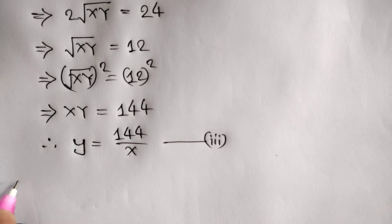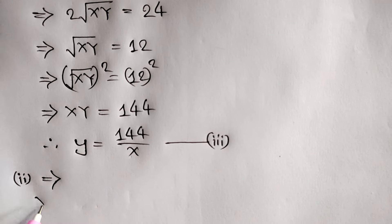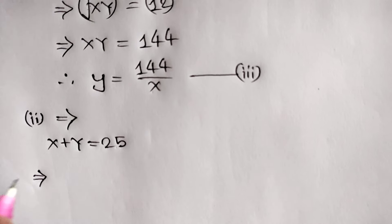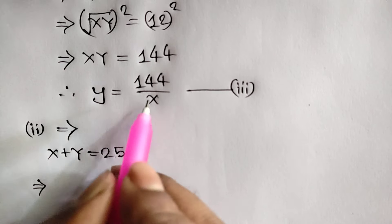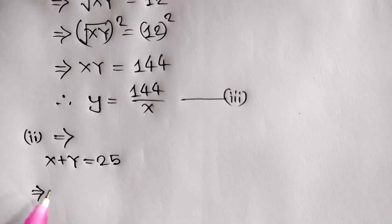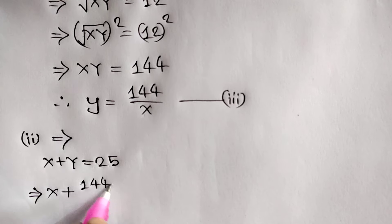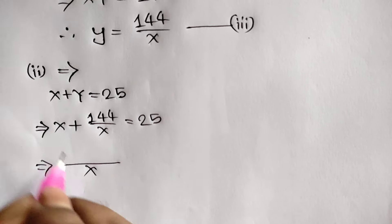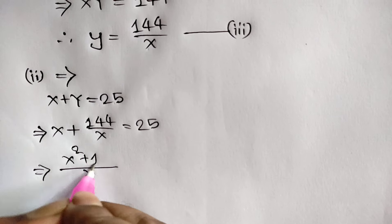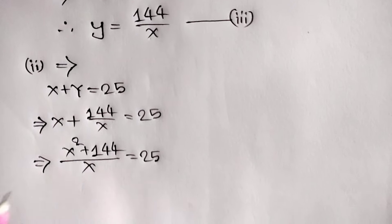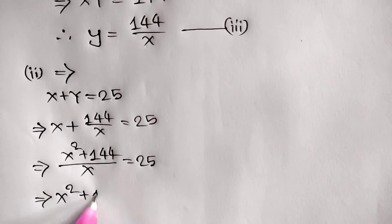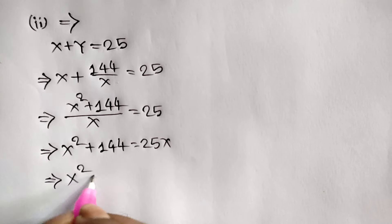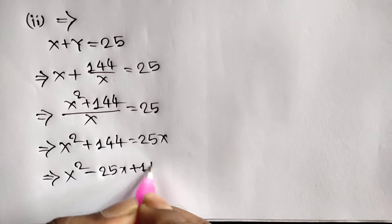From equation number 2, x plus y = 25. Substituting y = 144/x from equation number 3, we get x + 144/x = 25. Multiplying through by x gives x² + 144 = 25x.